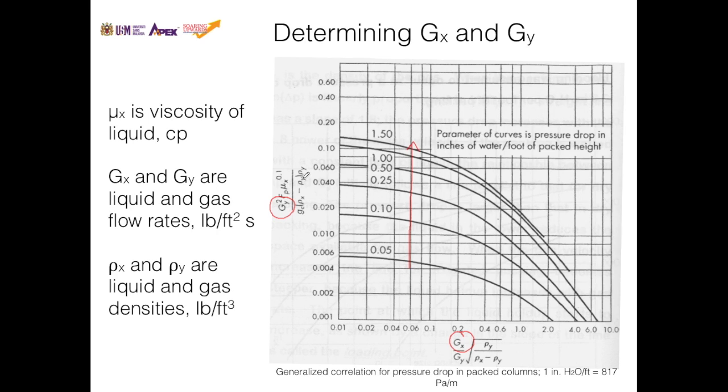In this case, ρx and ρy are the liquid and gas densities, and μx is the viscosity of liquid, which are all constants. So in basic terms, this figure relates solvent flow rate to gas flow rate for different flooding pressure drop.